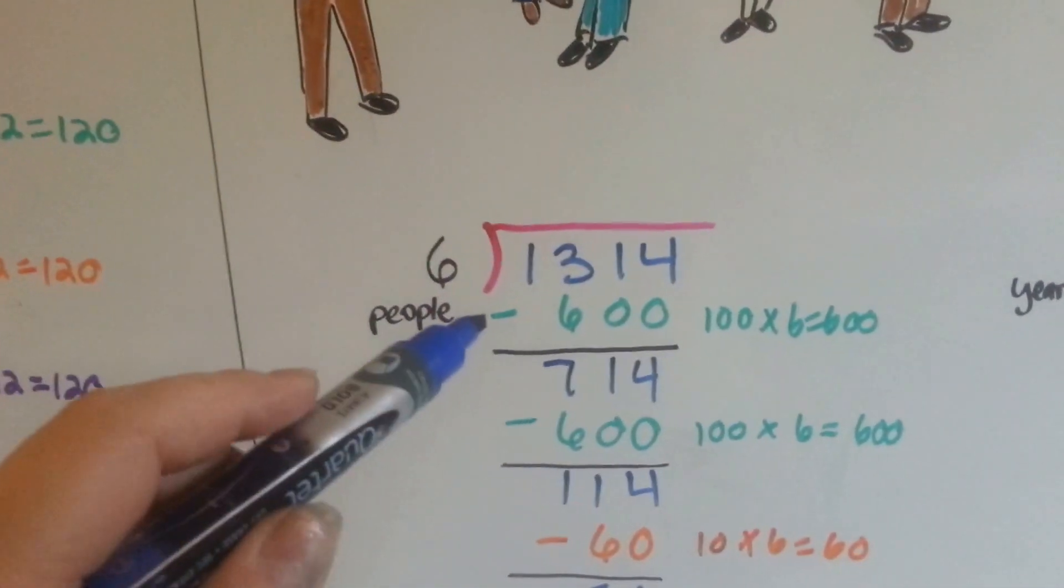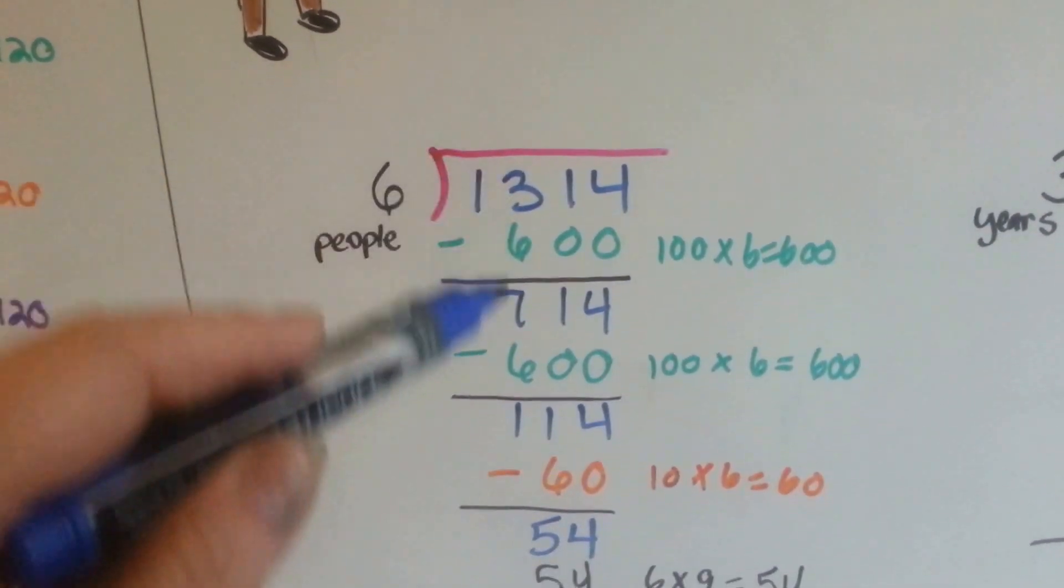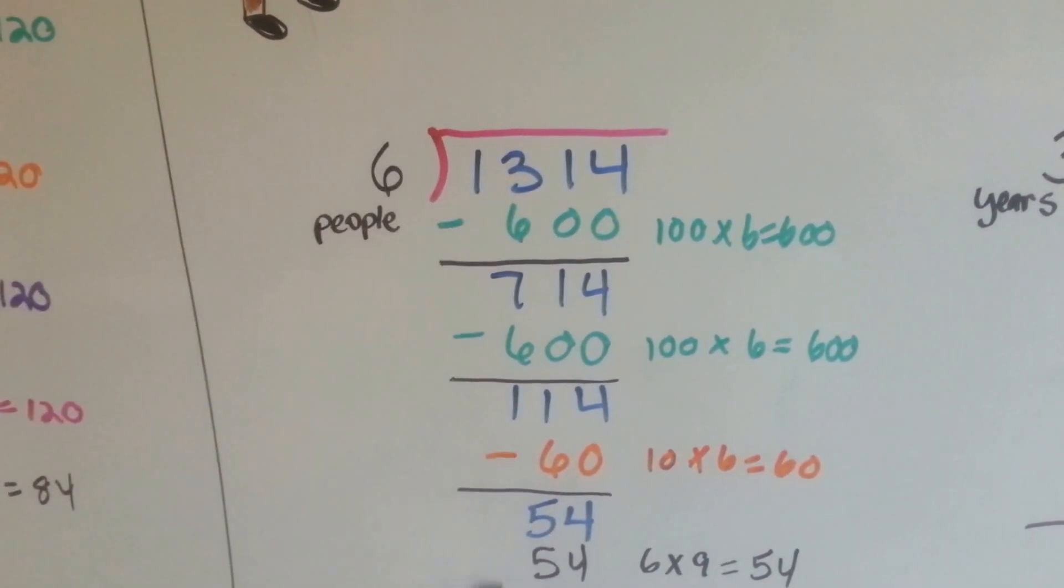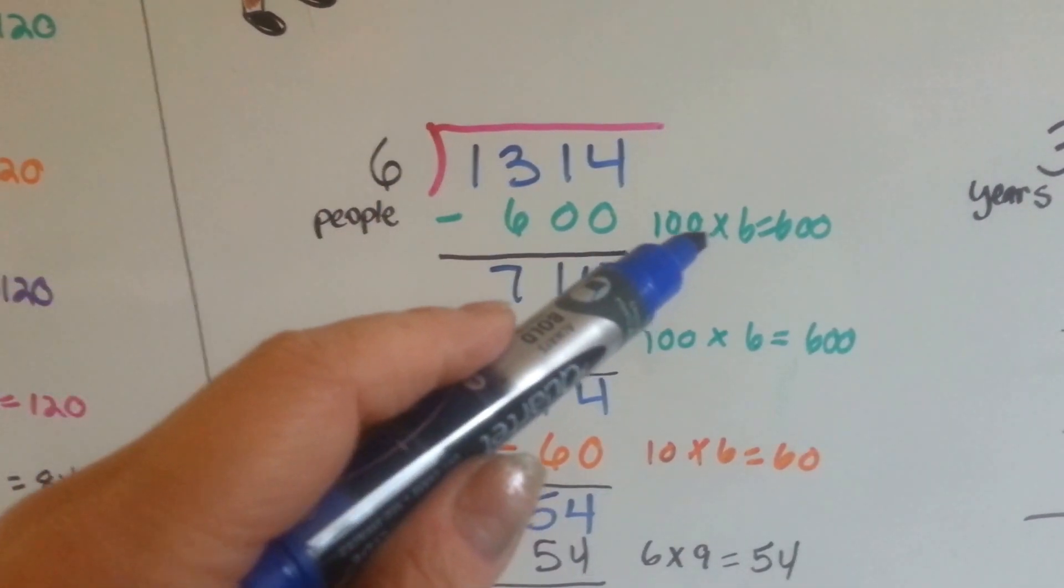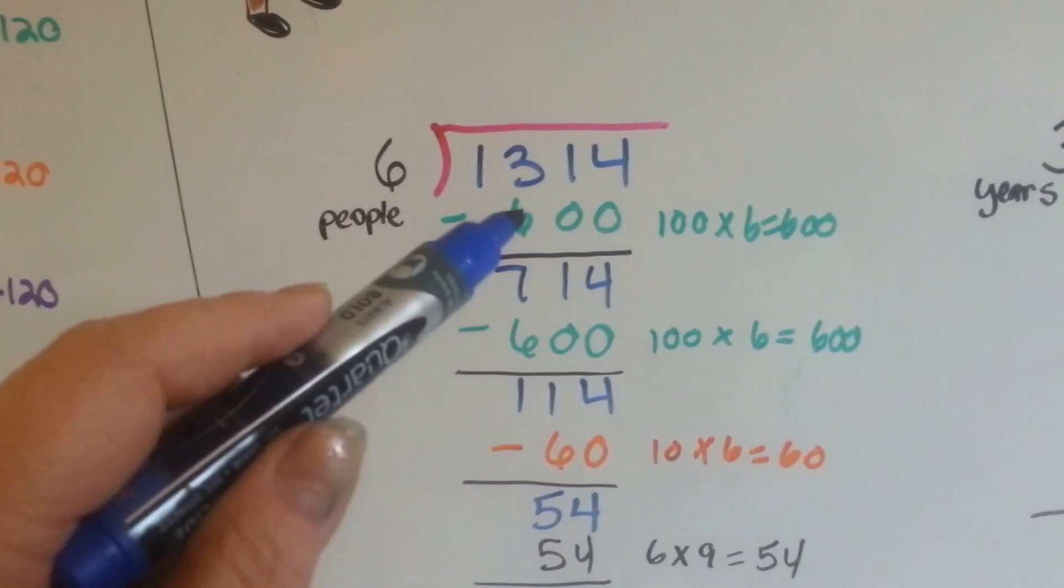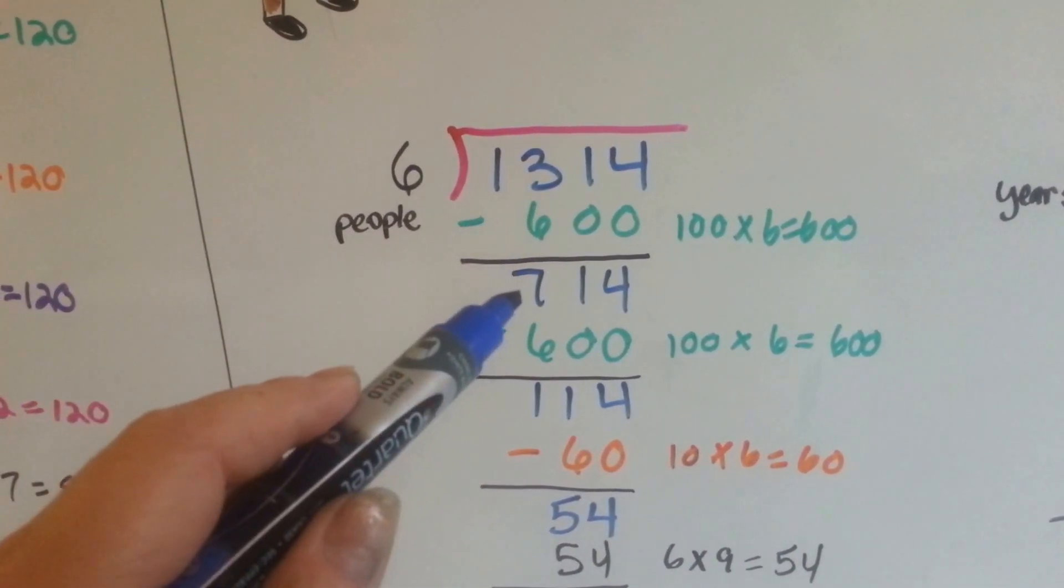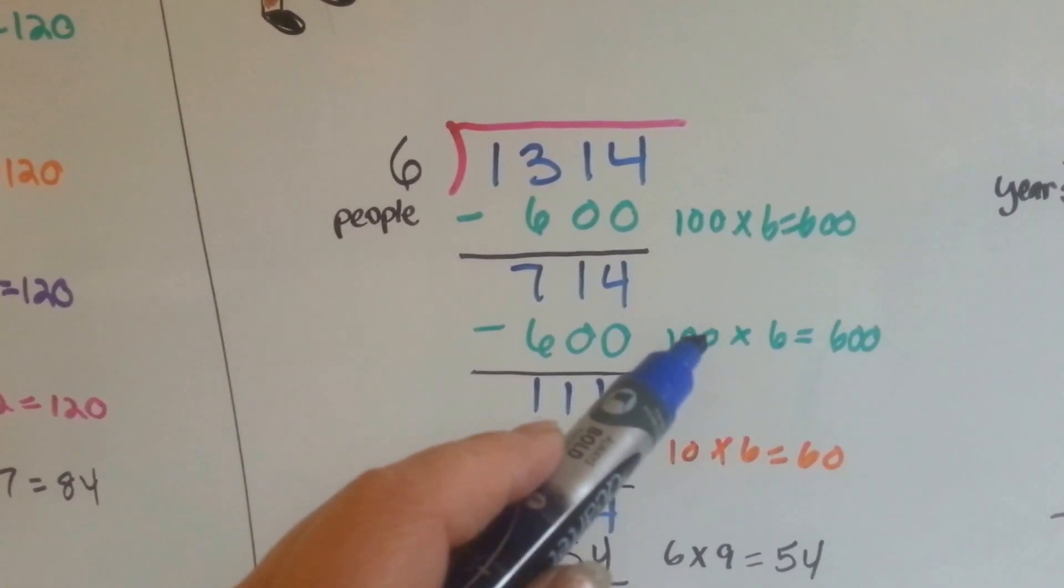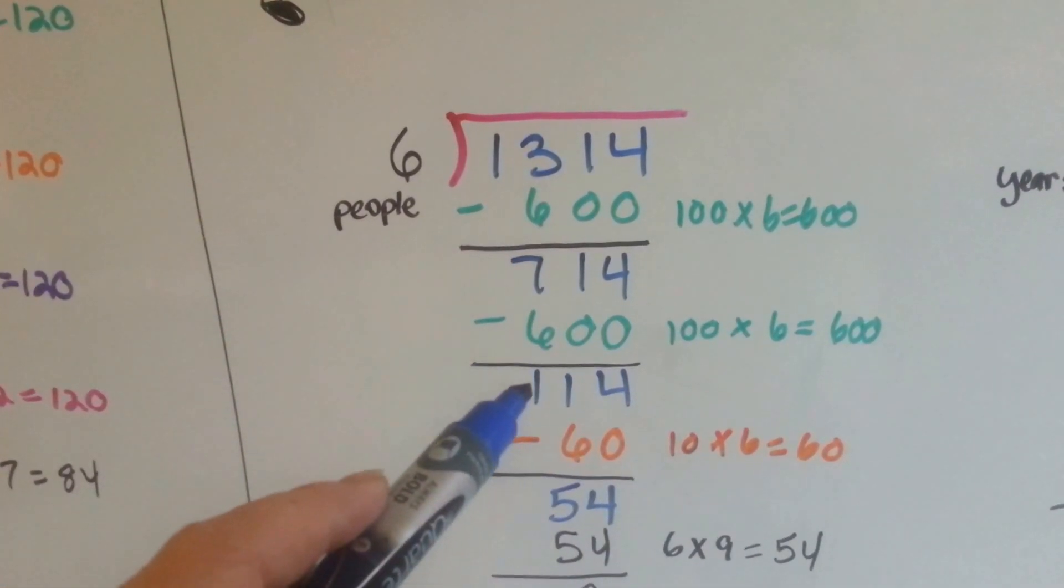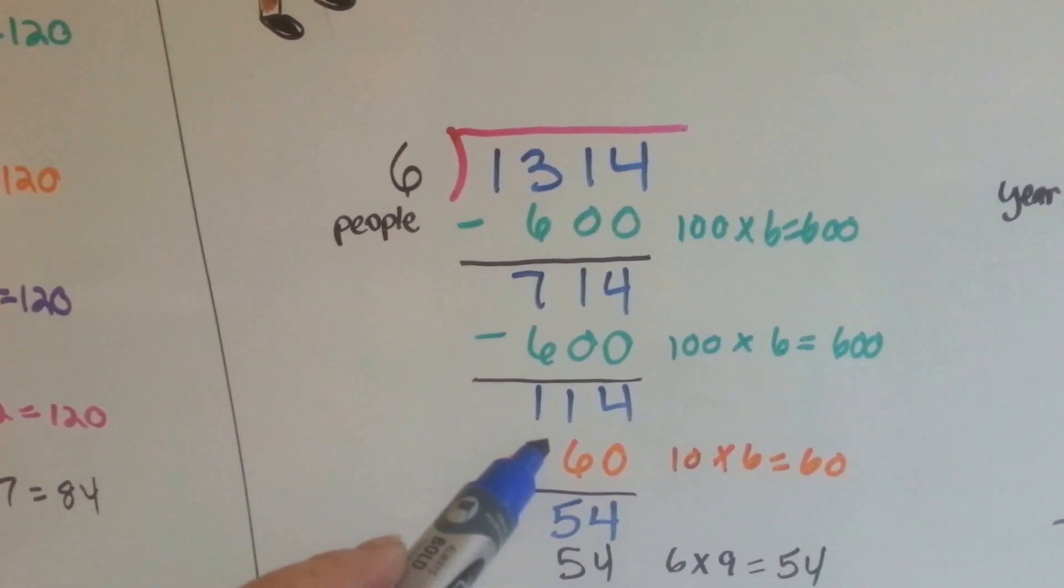Here's the 1,314 divided by the six people, and we're going to do repeated subtraction. I know that six times 100 is 600. So we'll do times 100. We'll take that away from the 1,314 and get 714. I can still take away another 600, so I can do another 100 times 6. That brings us to 114. Now I can do a 10 times 6 and take away a 60.